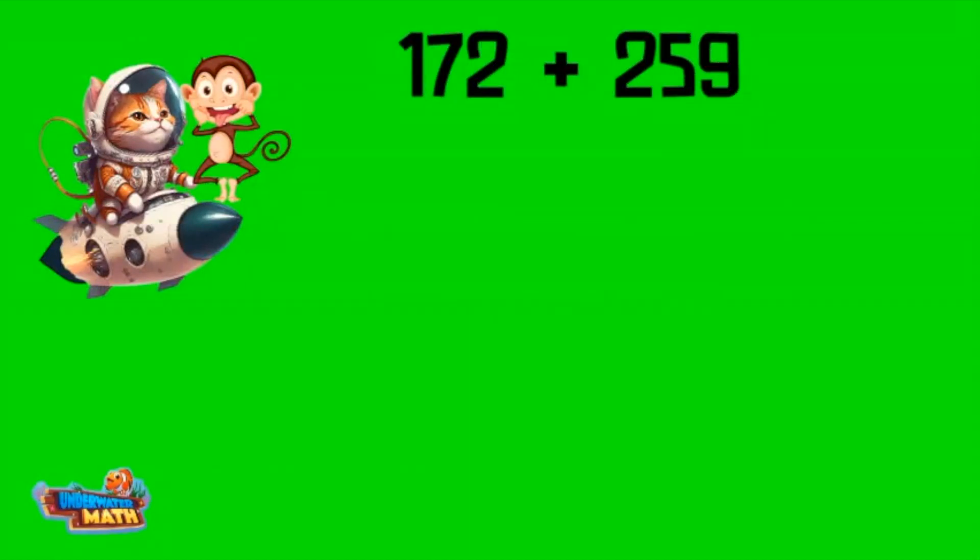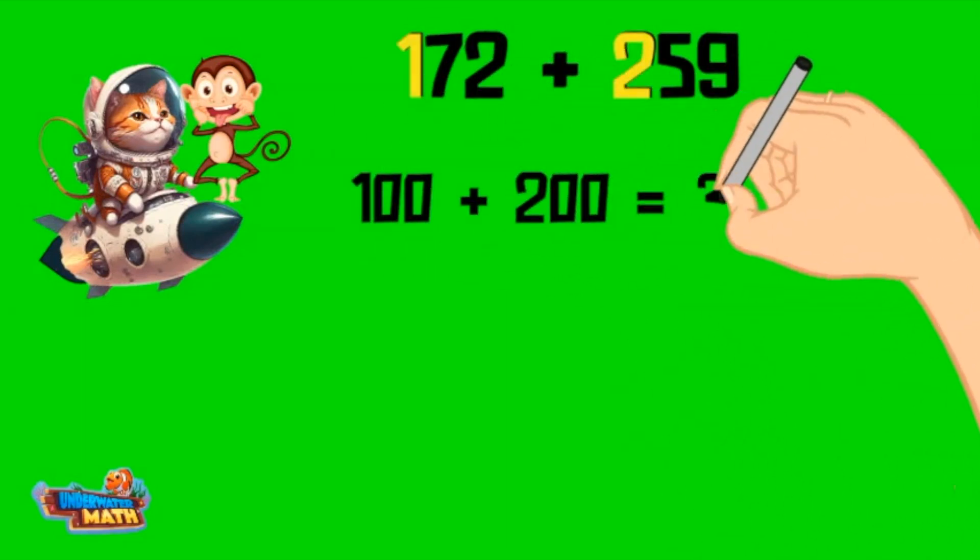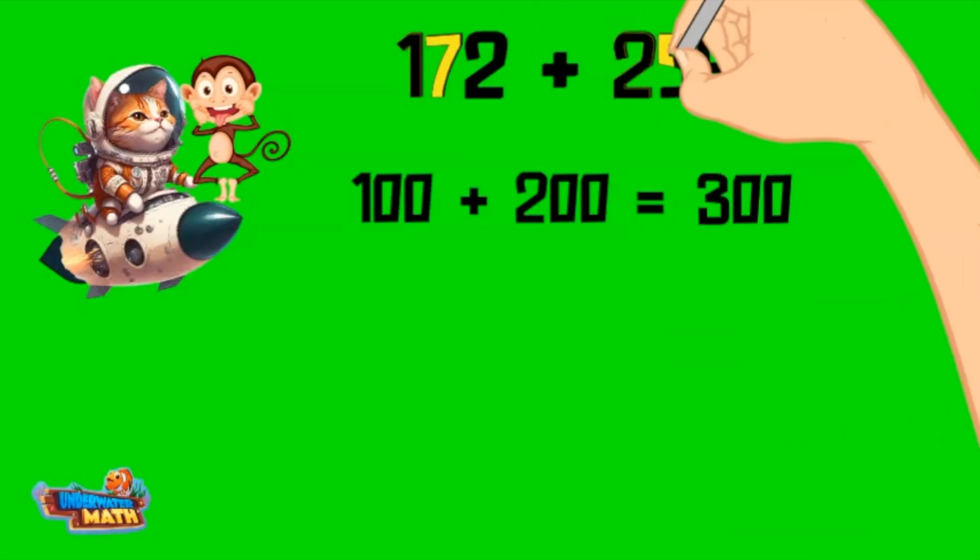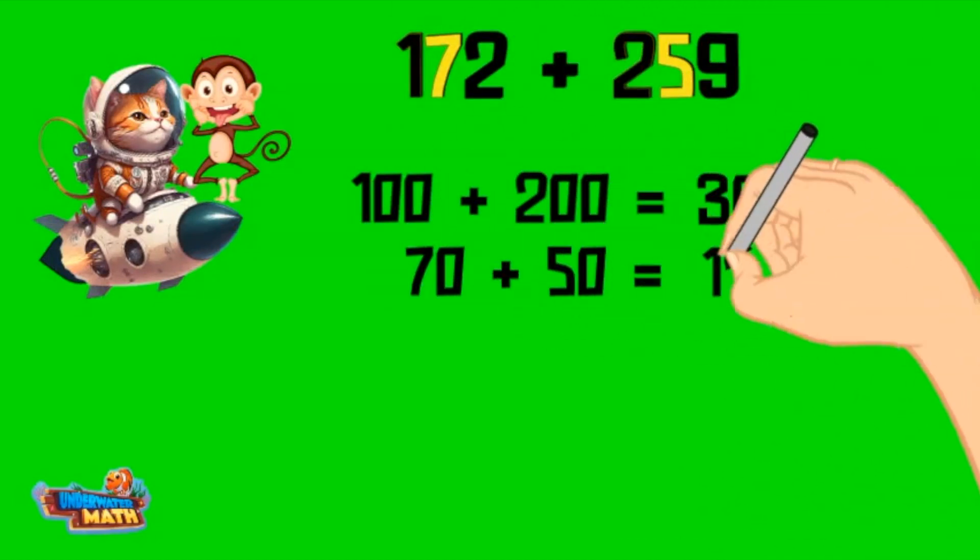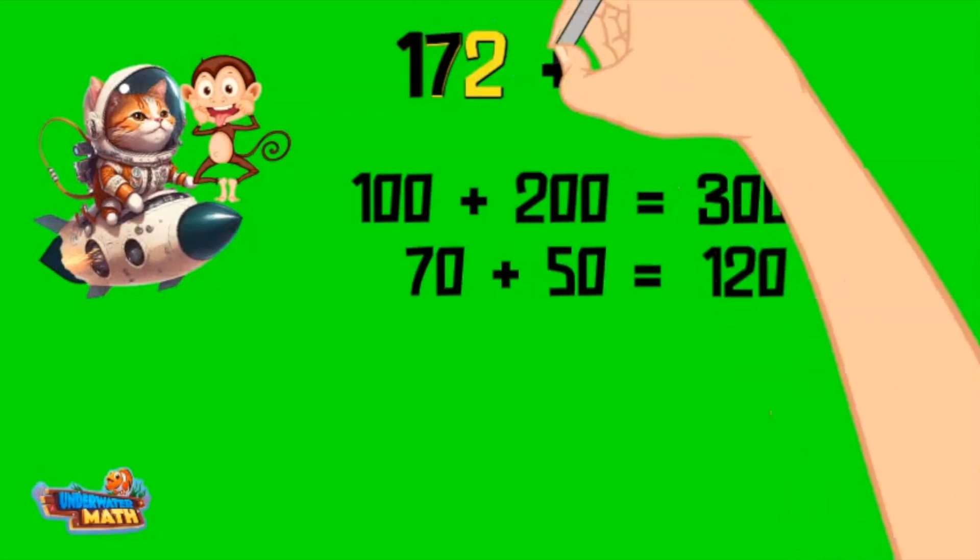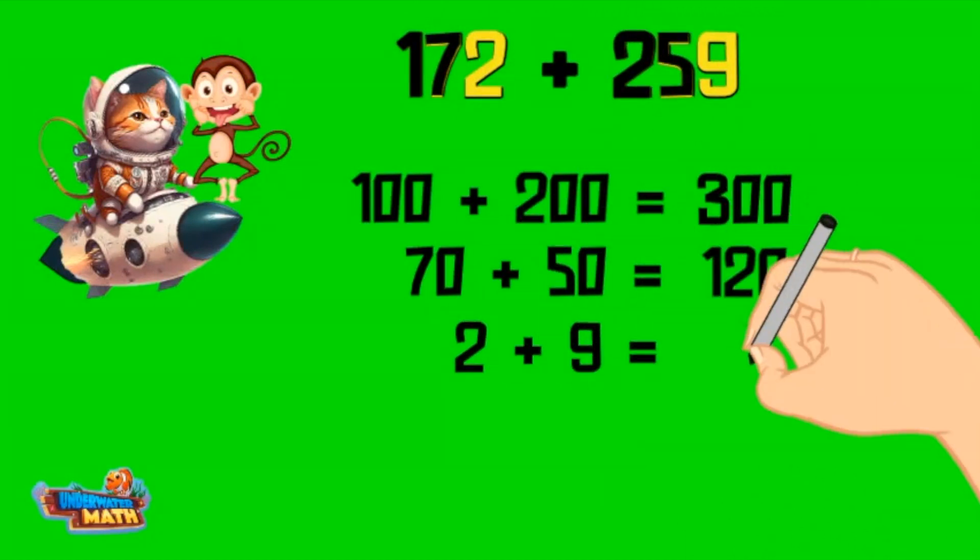I want to try. I am going to add 172 plus 259. I start with adding the hundreds: 100 plus 200 equals 300. Then the tens: 70 plus 50 equals 120. Then the ones: 2 plus 9 which equals 11.